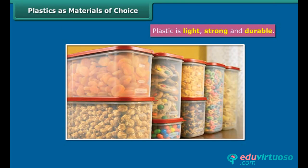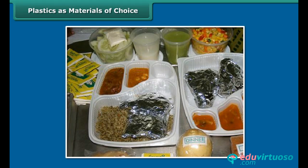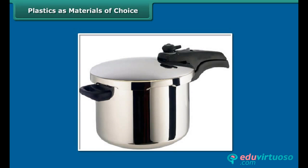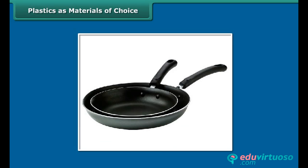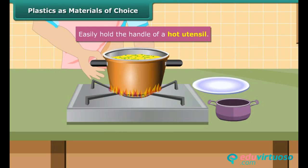Why are plastics so widely in use? Plastic containers are mostly used for the storage of food grains, pickles, salt and spices, since these are relatively non-reactive and impermeable to moisture. Since plastic is a poor conductor of electricity, electrical wires have plastic covering. Plastics being poor conductors of heat, we can therefore easily hold the handle of a hot utensil.